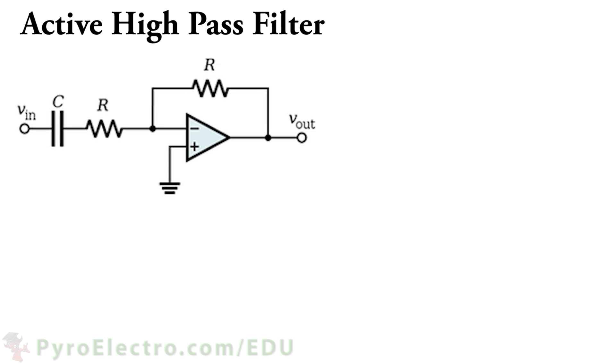The second circuit to know about is the active high-pass filter. This filter places a capacitor before the inverting input of the op-amp. The frequency cutoff formula is the same as the low-pass filter. However, things are reversed when we look at the graph of frequencies.